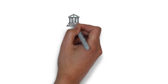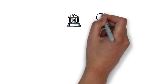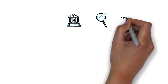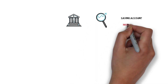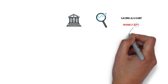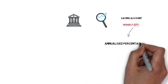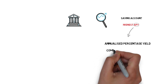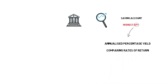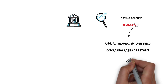To compare it to traditional finance, you can imagine people trying to find the best saving account with the highest APY. APY stands for annualized percentage yield and it's a common way of comparing rates of return on your money across different products. It's also a common way of expressing the returns of different yield farming strategies.